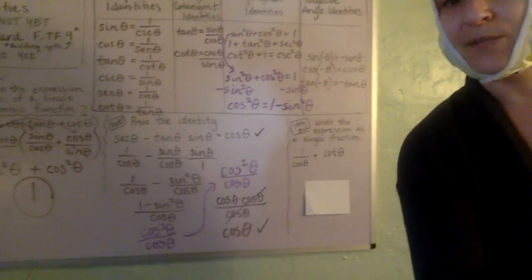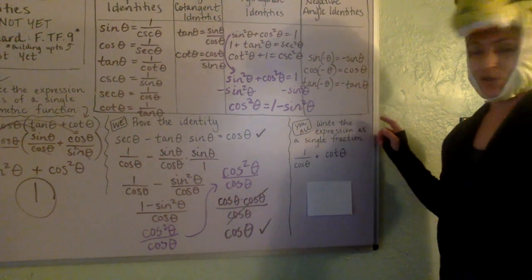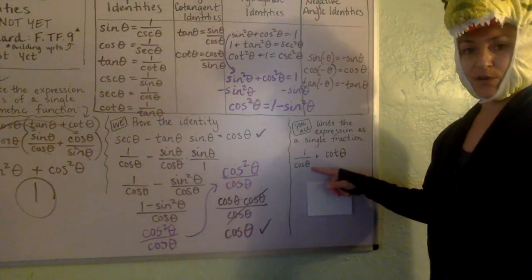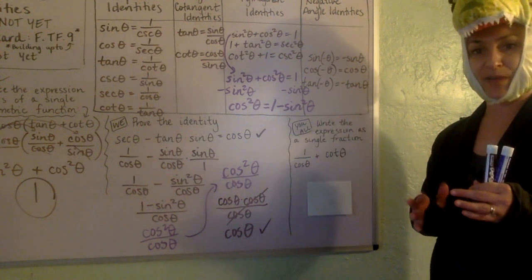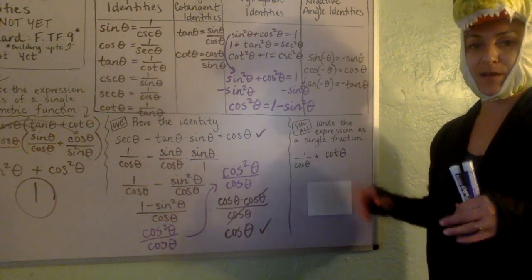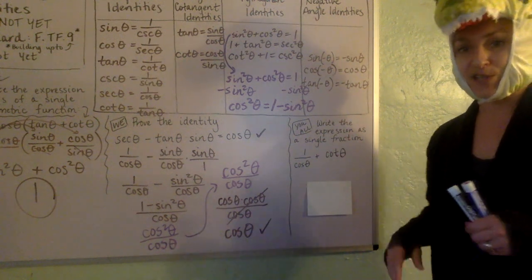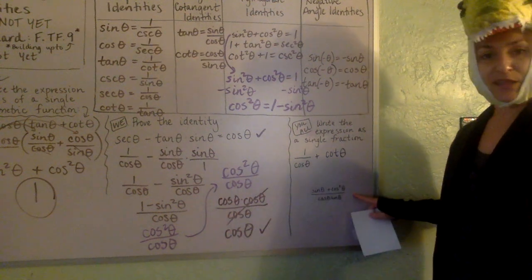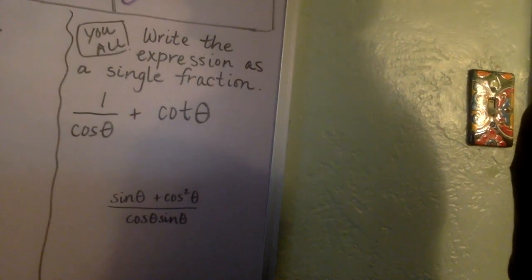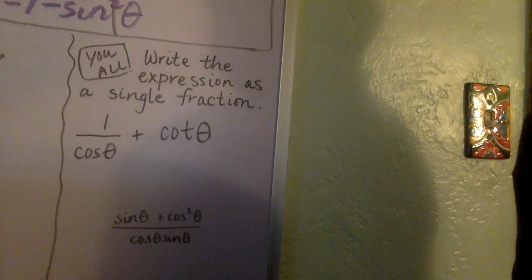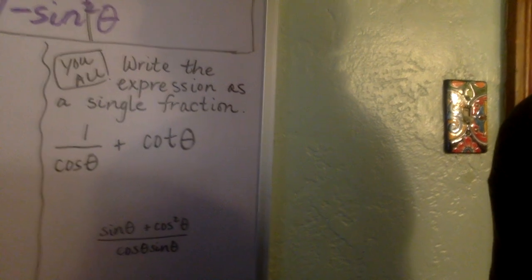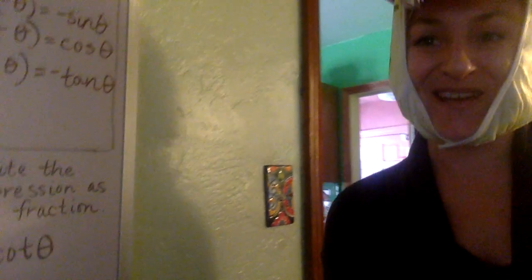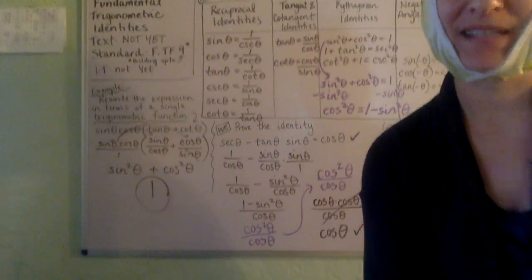For the last problem, you want to write one over cosine theta plus cotangent theta so that it's one fraction. Go ahead and pause this and give it a shot. When you're done, you should be getting sine theta plus cosine squared theta all over cosine theta sine theta — and now it's all just one fraction. Have a great day everyone, and keep practicing those identities.